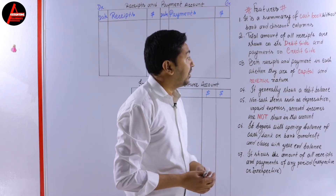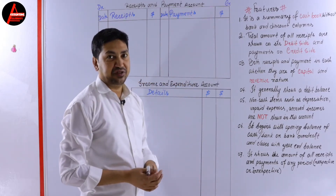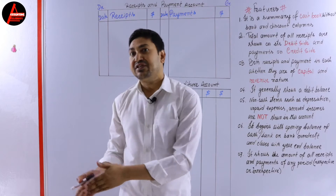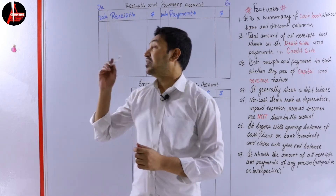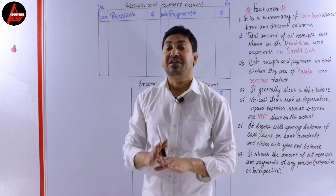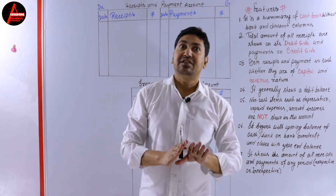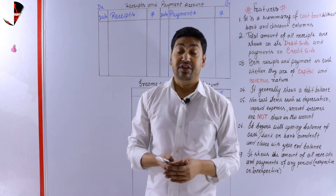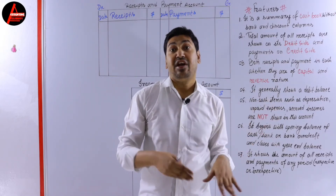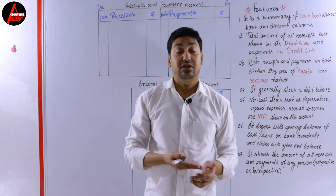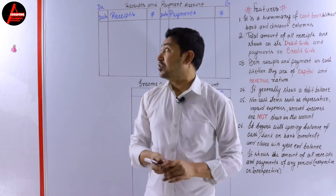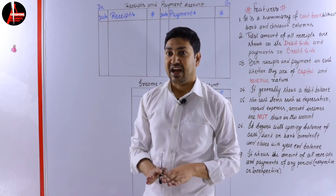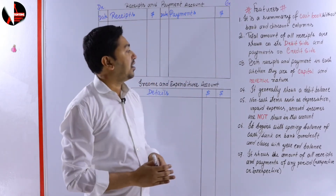Number three: both receipts and payments in cash, whether they are of capital or revenue nature. You know there are capital expenditure, revenue expenditure, capital receipts and revenue receipts. But when you prepare this receipt and payment account you don't have to consider anything - just if it is a receipt you write it on the receipt side, if it is a payment you write it on the payment side. I have videos on capital and revenue expenditure and receipts linked in the description.